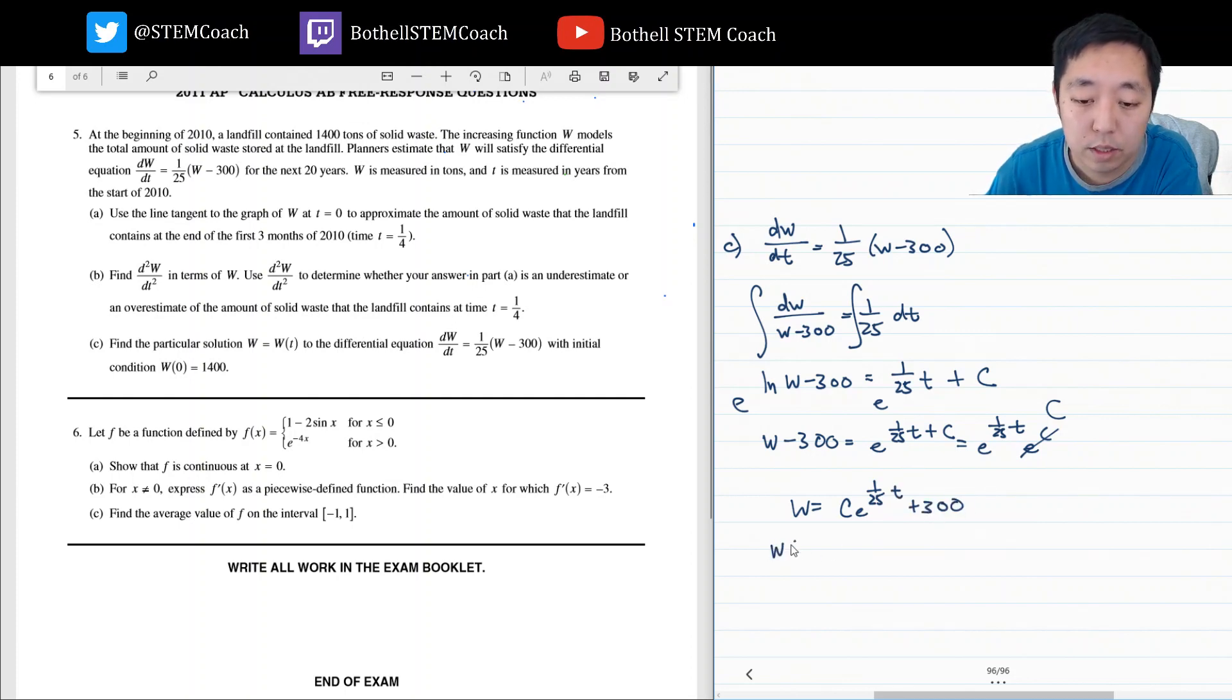So W then equals c times e to the 1 over 25t plus 300. And then I know W of 0 is 1400. When I plug in, so this is my general solution. If I plug in 0, I get c times e to the 0, which is just 1 plus 300. So c is equal to 1100 by subtracting 300. And so my exact particular solution is 1100 e to the 1/25 t. And that wraps up that one.